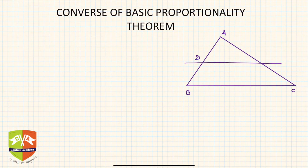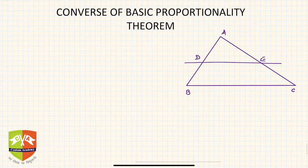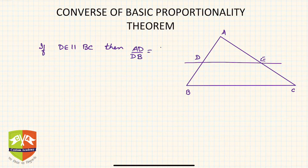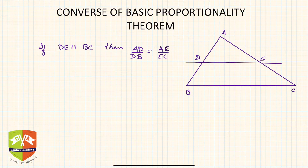So let's say this is triangle ABC, and D and E are the two points where this line cuts the sides. By the Basic Proportionality Theorem, if DE is parallel to BC, then AD upon DB is equal to AE upon EC. That's what we learned — this is BPT.